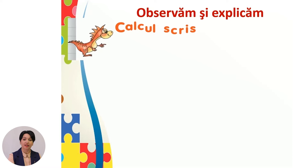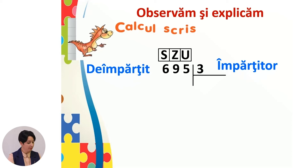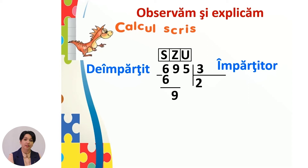Voi explica acum cum realizăm calculul scris. Câtul numerelor 695 și 3. Observăm că împărțitul 695 este format din sute, zeci și unități, iar împărțitorul 3 doar din unități. Împărțim sutele: 600 ÷ 3 obținem la cât? 200. Verificăm: 200 × 3 = 600. Coborâm cifra zecilor și împărțim zecile: 90 ÷ 3 obținem la cât? 30.